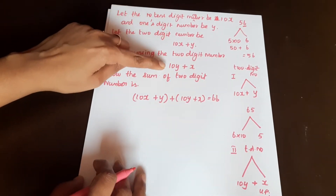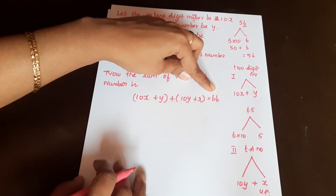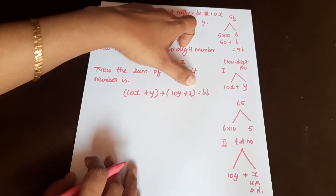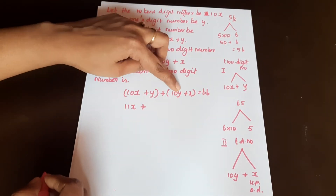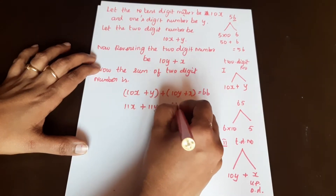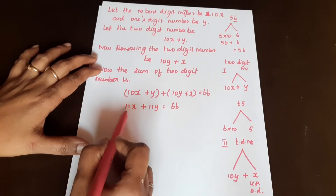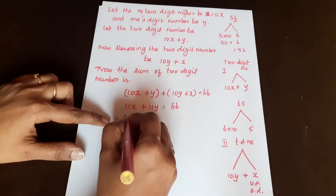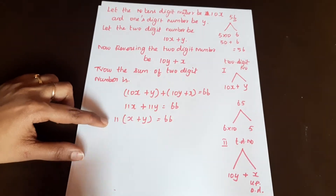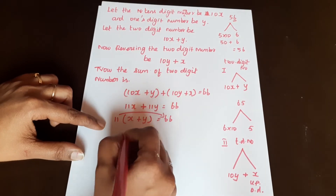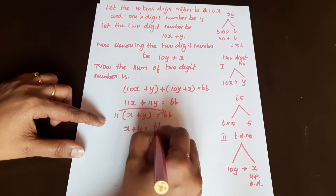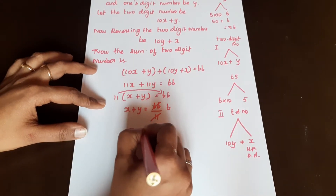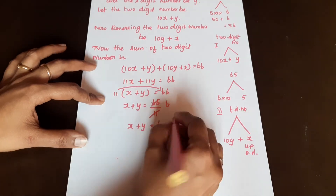When we add these two numbers, the sum is 66. So: (10x + y) + (10y + x) = 66. Combining like terms, 10x plus x gives 11x, and y plus 10y gives 11y. So 11x + 11y = 66. Taking 11 as a common factor: 11(x + y) = 66. Dividing both sides by 11, x + y = 6. This is equation number 1.